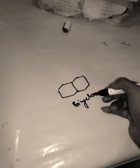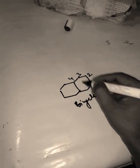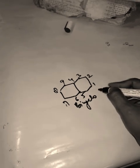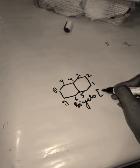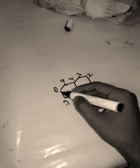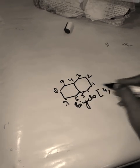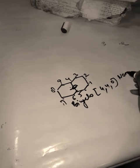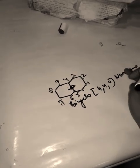Another bicyclic example: count carbons — one through nine, total nine carbons. Write 'bicyclo'. Bridge carbons: one side has four, the other has four, and the third bridge has zero. So [4.4.0]. Single bond gives '-ane', nine carbons gives 'non'. Name: bicyclo[4.4.0]nonane.